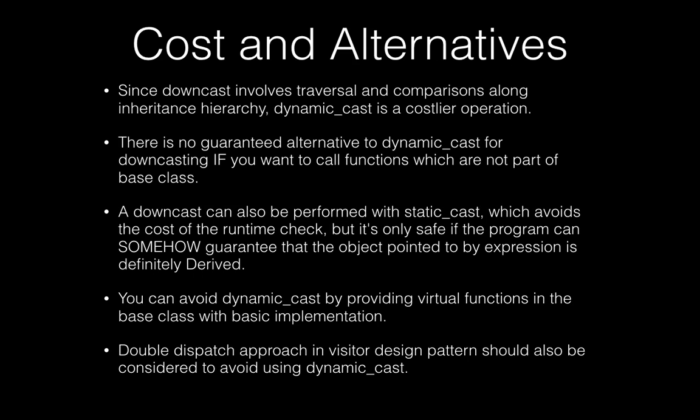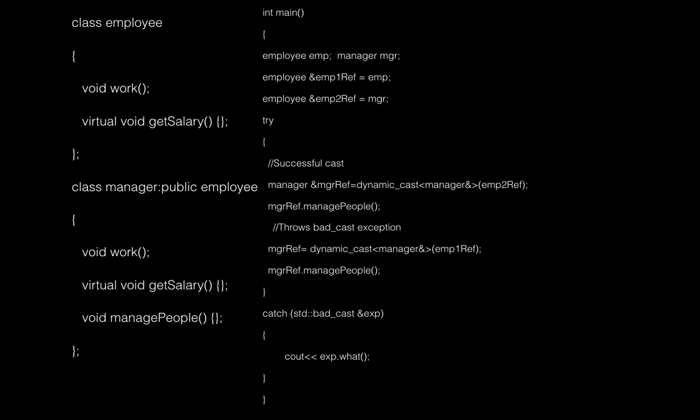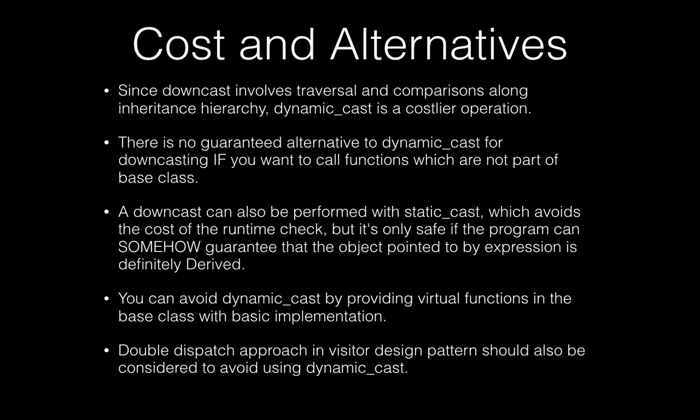Another alternative is to provide virtual function implementations in the base class — for example, a basic implementation of manage_people in Employee, or just doing nothing in the base class. A further alternative is the double dispatch approach, like the visitor design pattern, which can also be used to avoid dynamic cast by relying on virtual functions.